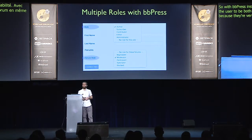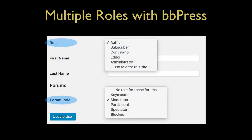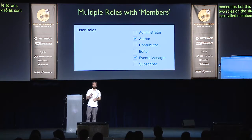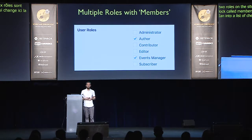BBPress provides a nice user interface for this in WordPress. When editing a user, you can select their role on the site as a whole — for example, author — and then their forum role separately, such as moderator. This is just a better UI to the fact that the user has two roles simultaneously. There's also a really nice plugin by Justin Tadlock called Members, which changes the dropdown into a list of checkboxes so you can assign multiple roles to users — for example, both author and events manager.